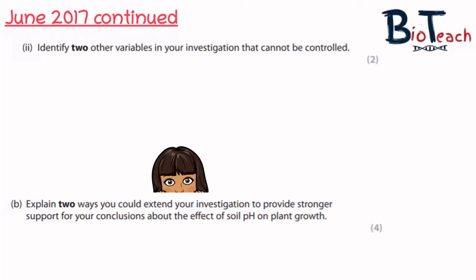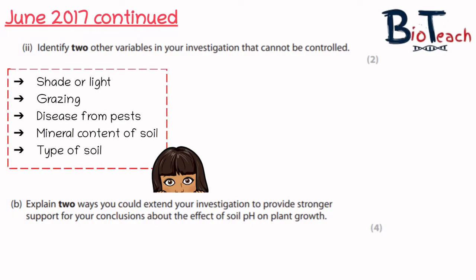The second part of the question from the same year asked you to identify two variables in the investigation that cannot be controlled. Considering this was an investigation of the effect of pH on plant growth, the types of factors I can't control are things like shade or light — I can't control how much shade or light a plant is under. I can't control disease from pests, the type of soil, or the mineral content of the soil. Any two of these would have been acceptable.